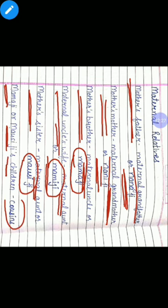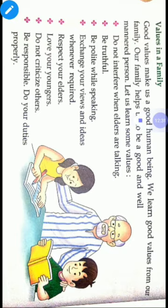Mother's brother is the maternal uncle, also called Mama ji. The maternal uncle's wife is the maternal aunt, also called Mami ji. Mother's sister is also a maternal aunt, called Mosti ji. The children of Mama ji and Mosti ji are our cousins.